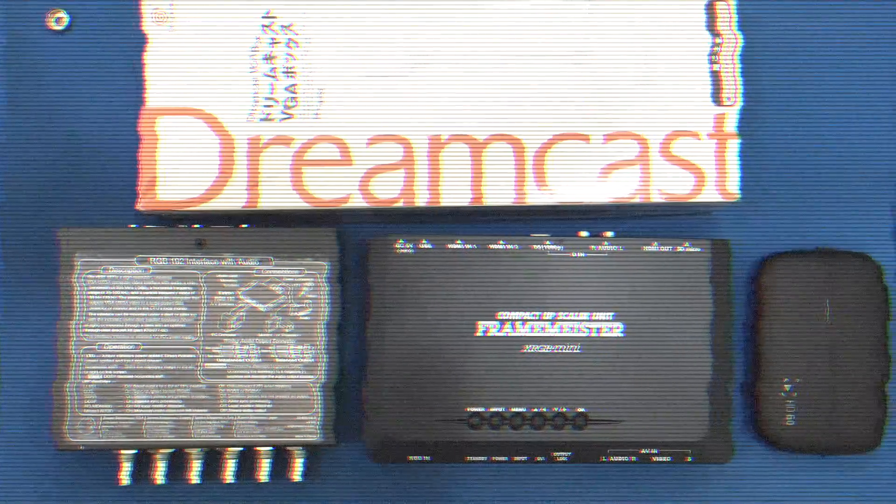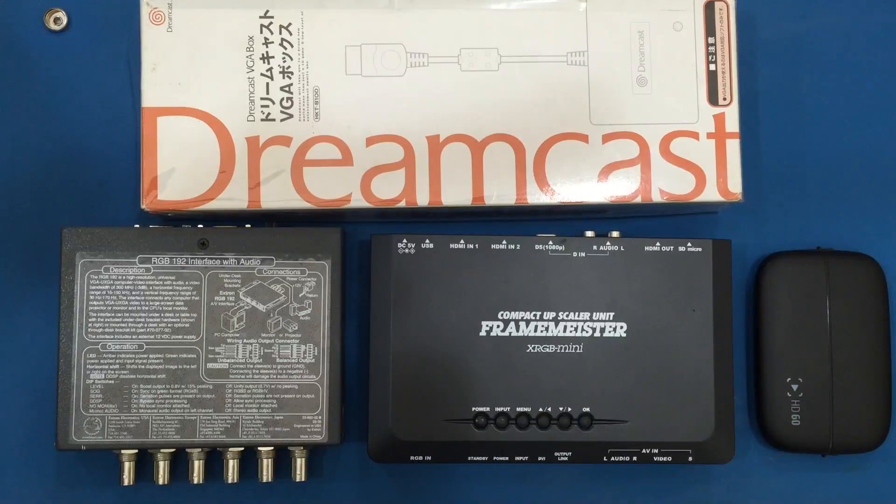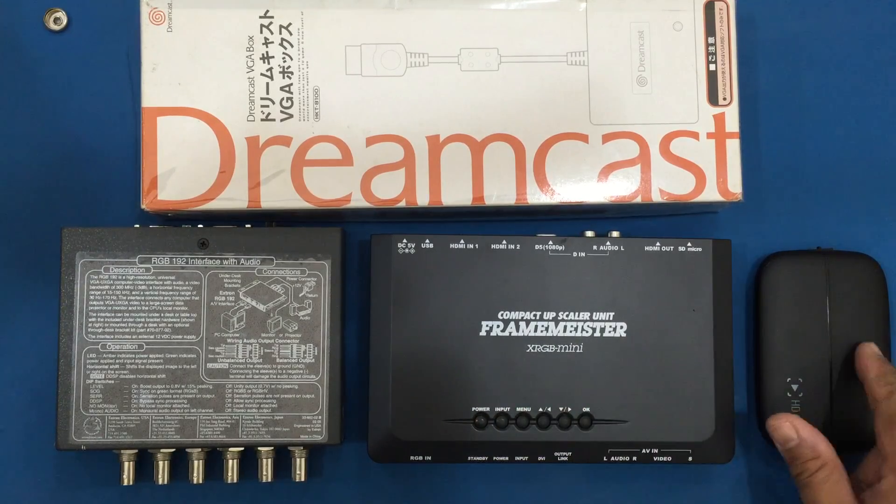In this episode I'm going to be building a Dreamcast cable so I can get an RGB signal to my Framemeister which will not only give me the best video for playing but also the best video for capture on the Elgato HD60.